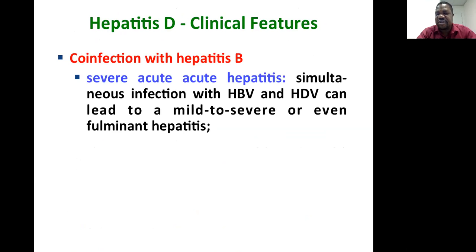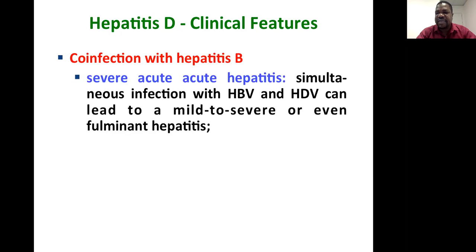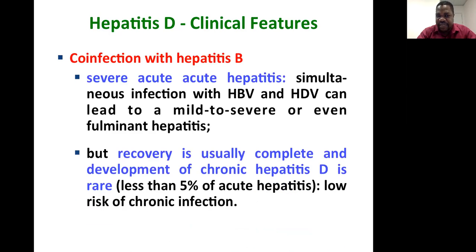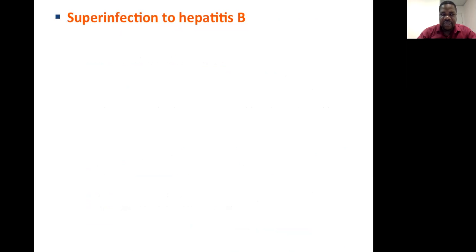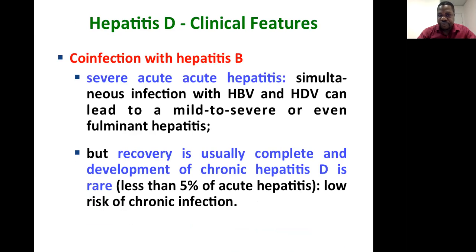Regarding clinical features, there are two main presentations. The first is co-infection with hepatitis B, which gives mainly a severe acute hepatitis. Simultaneous infection with hepatitis B and D can lead to mild to severe or even fulminant forms of hepatitis. However, recovery is usually complete, and the development of chronic hepatitis D is rare — less than 5% of acute hepatitis cases — representing an especially low risk of chronic infection.